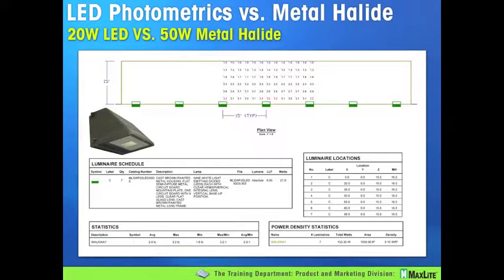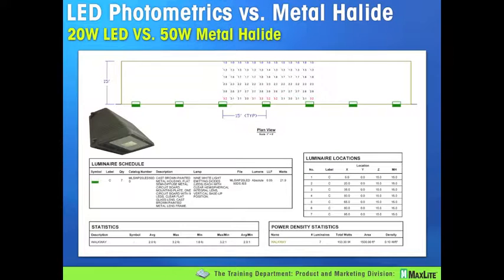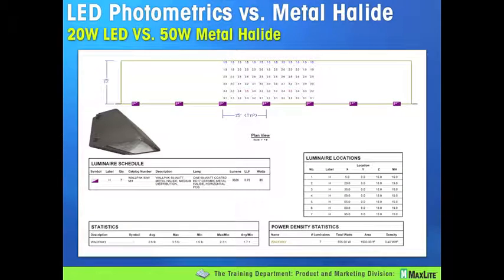The first example is a 20-watt LED dark skies compliant wall pack versus a 50-watt metal halide dark skies compliant wall pack. The LED layout shows a power density of about one-tenth of a watt per square foot, an average foot candle reading of about two foot candles throughout the specified area, and a forward throw of at least 15 feet. Now comparing to the 50-watt metal halide: it uses about four-tenths of a watt — four times the power to light the same square footage. The total watts on the 50-watt system comes to 85 watts with a luminaire light loss factor of 0.72.